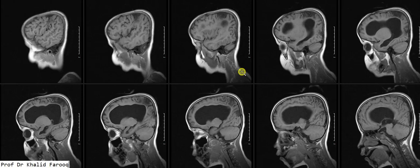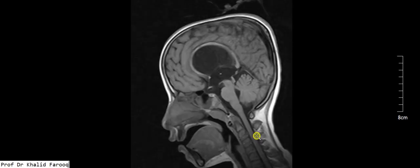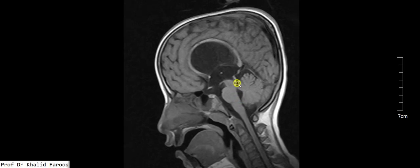Here we can see significantly dilated lateral ventricles and an area of gliotic changes because of old ischemic insult. On the sagittal view, there is a normal appearing fourth ventricle, but stenosis is noted in the lower portion of the cerebral aqueduct. We can see the third ventricle is dilated.